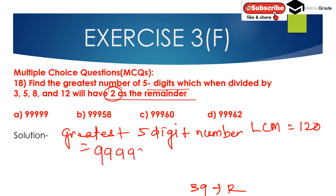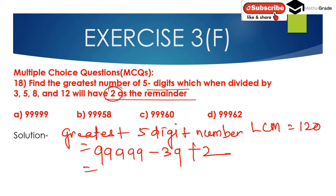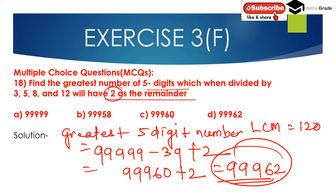99,999 minus 39 — since 39 is the remainder — gives us the base. Then we add back the required remainder of 2. So the greatest five-digit number is 99,962. Option B, that is 99,962, is the correct answer.